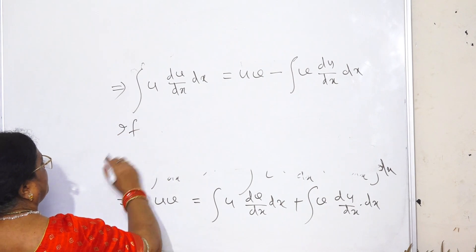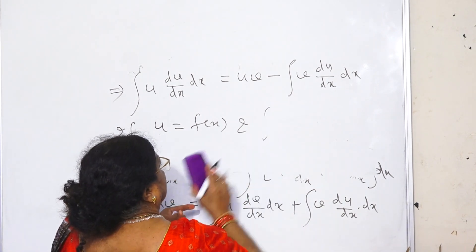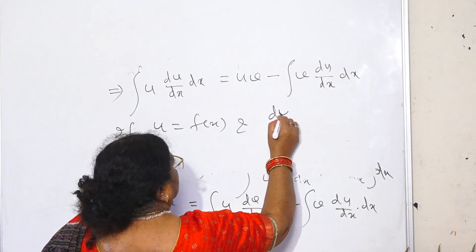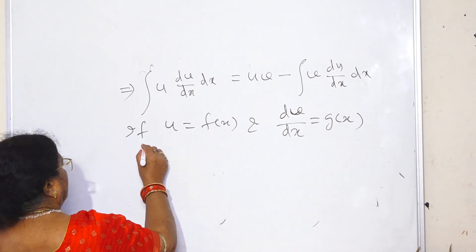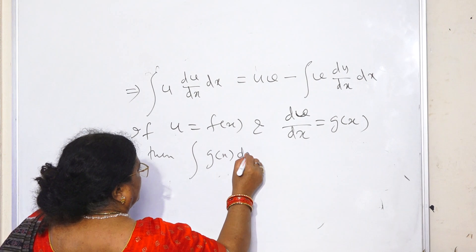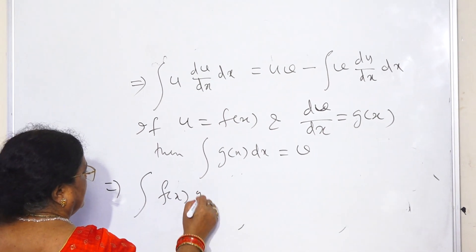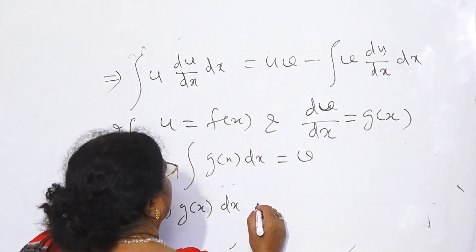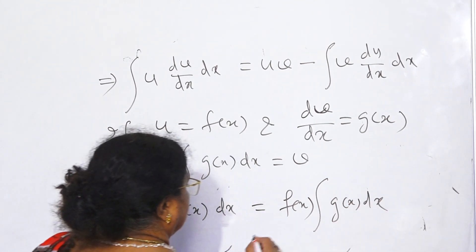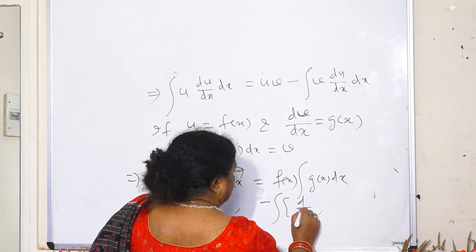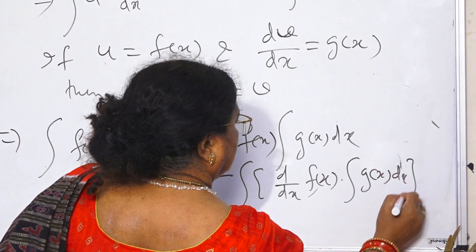If u is equal to f(x) and dv/dx equals g(x), then integration of g(x) with respect to x equals v. This implies integral of f(x)·g(x) dx equals f(x) into integral of g(x) dx minus integral of the derivative of f(x) into integral of g(x) dx, with respect to x.